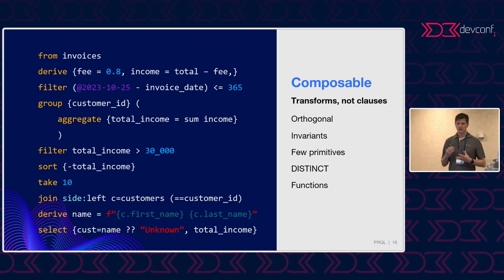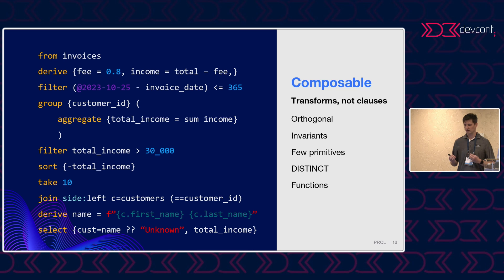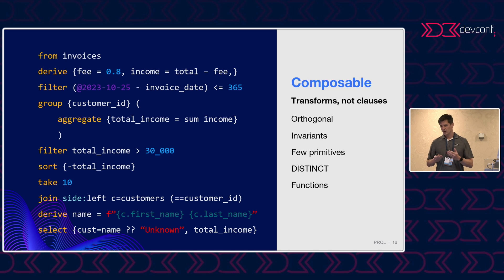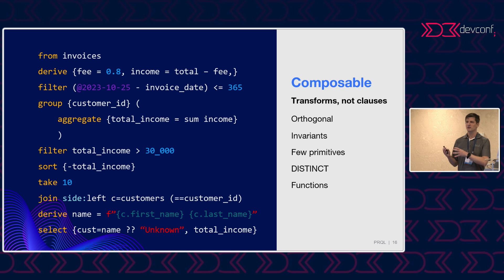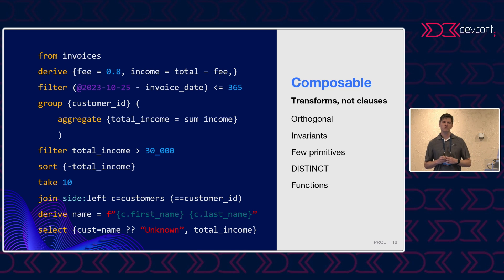Each keyword is a transform — you can see the orange words on the left-hand side. It's really easy to scan your pipeline: look at the first word and see what each step does — a filter, a sort, et cetera. Because they're independent transforms rather than clauses, you can cut the pipeline at any point and move it elsewhere. You can also comment out a single line and the whole query still works, whereas with interactive SQL you'd have to shift a lot of things around.